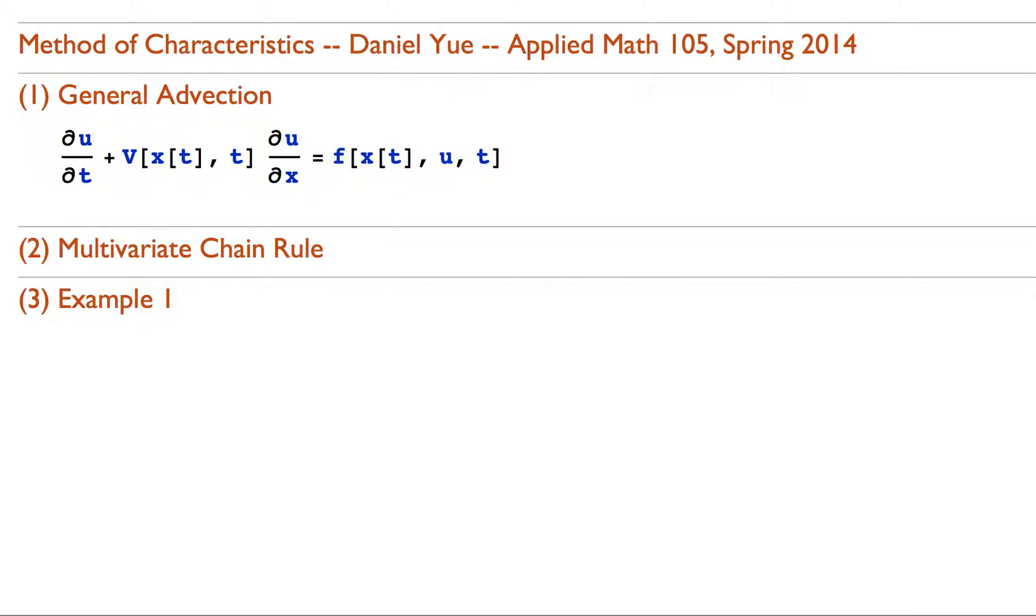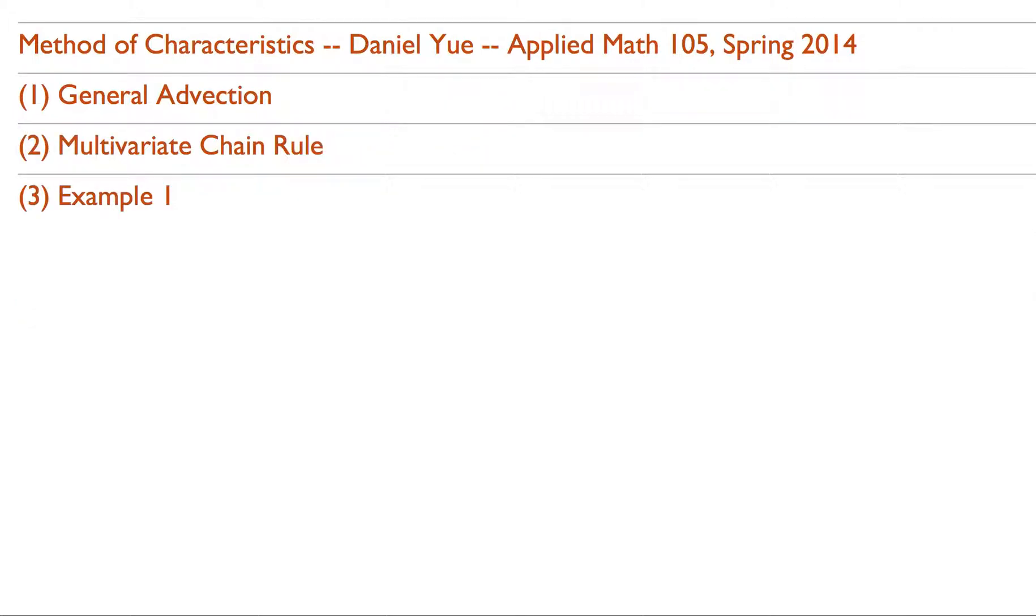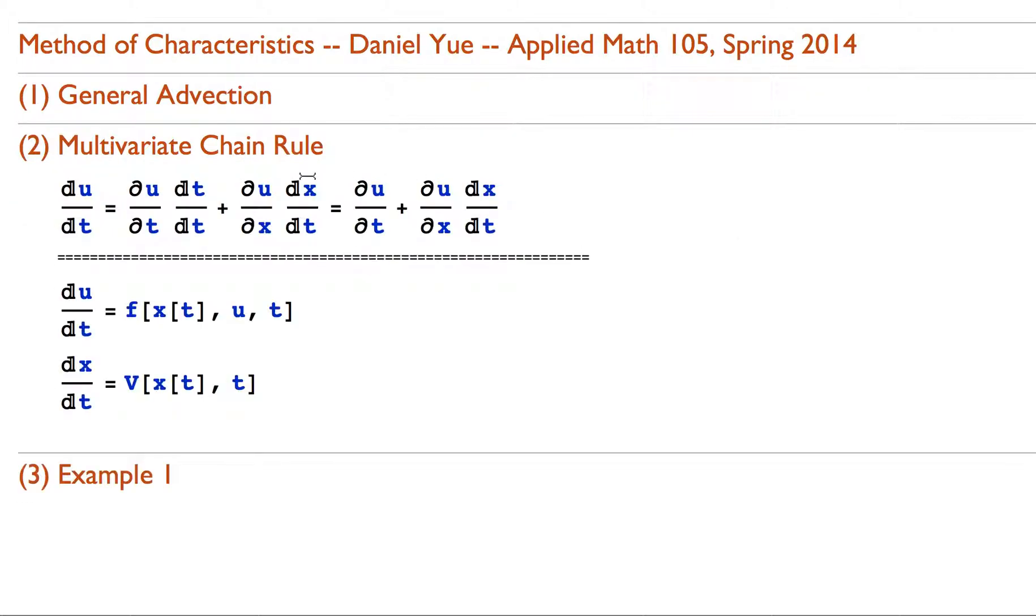So the method of characteristics basically works as follows. Taking advantage of the multivariate chain rule, a function u which is dependent on two variables, time and position, its full derivative with respect to time can be written as the partial derivative of u with respect to time times the derivative of time with respect to time plus this guy here. Obviously the full derivative of time with respect to time is one, so we can simplify and write our expression as follows.